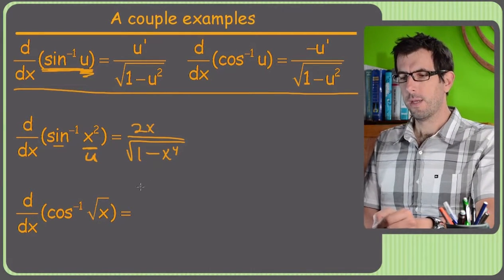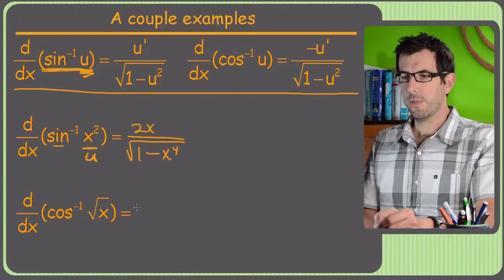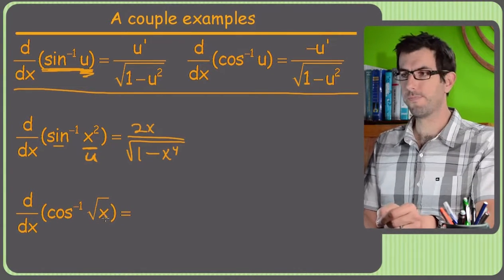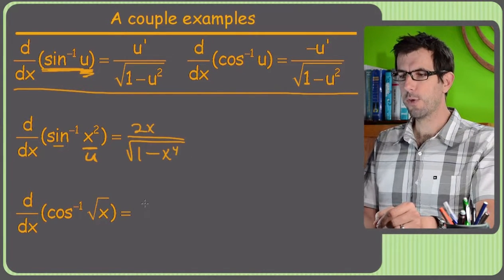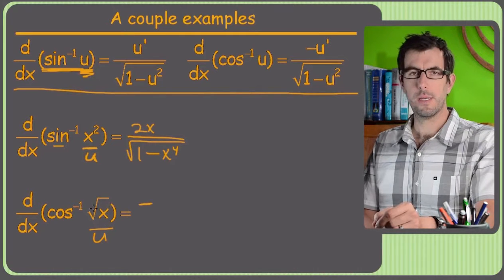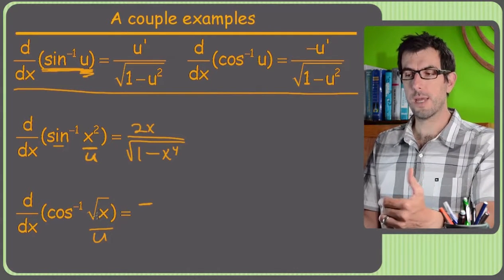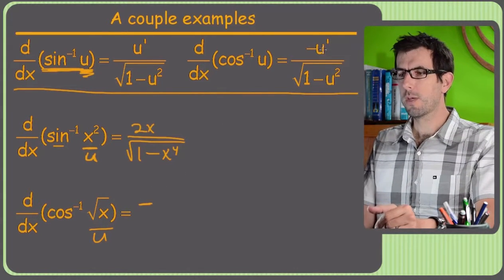Alright, next one. Inverse cosine. Alright, let's go up to our inverse cosine formula. We've got a negative U prime. And of course my U, once again, is just whatever's behind inverse cosine, which this time is square root of x. So what's my U prime? Well, this is a little bit messier, right? So I'm going to work out the U prime off to the side.